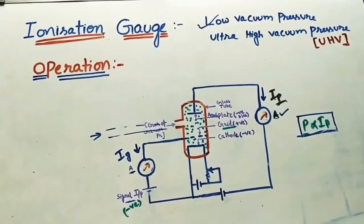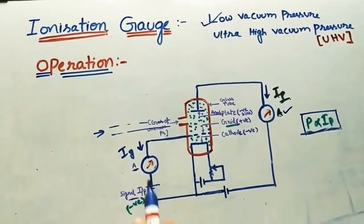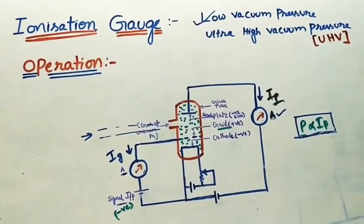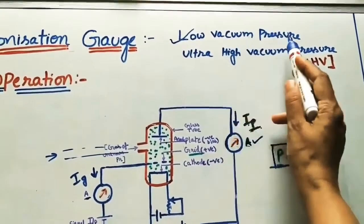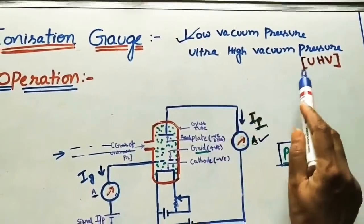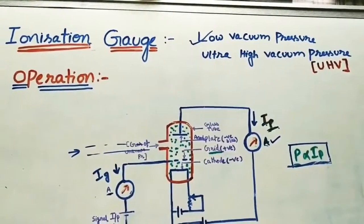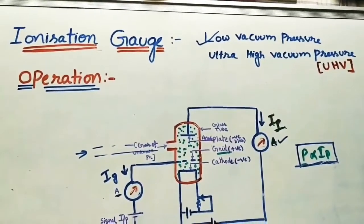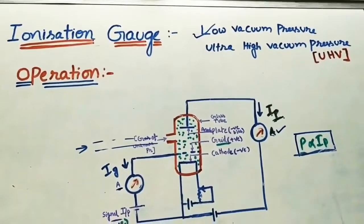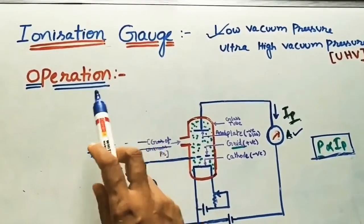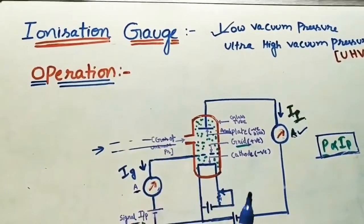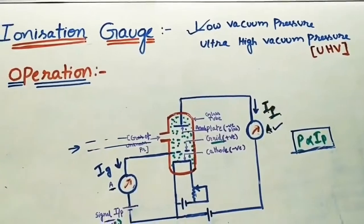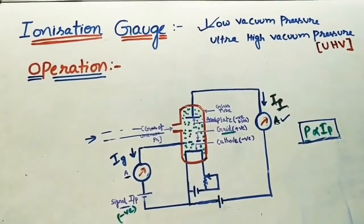Hi to all, welcome to my channel. Today I will explain about ionization gauge, which is used to find low vacuum pressure and ultra high vacuum pressure. First I will tell what is the necessity of these vacuum pressures.